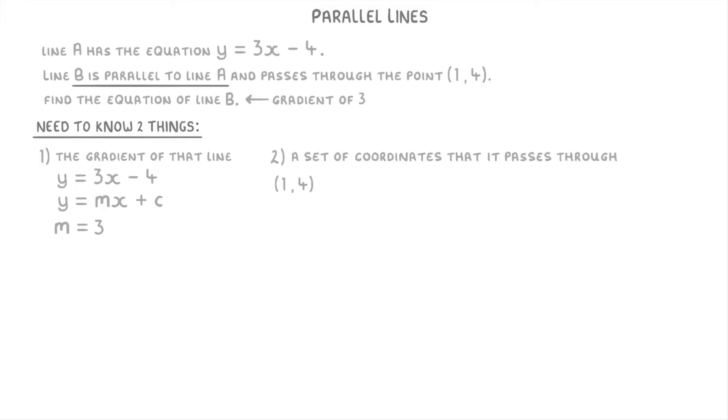And now that we know both the gradient and a set of coordinates that the line passes through, we can finally work out the equation of the line.